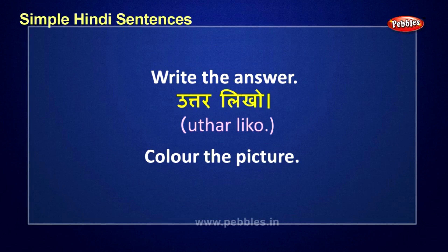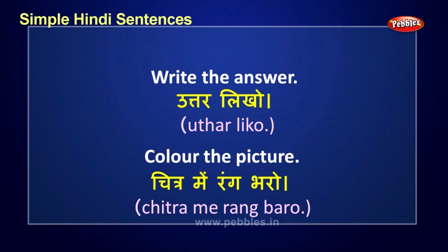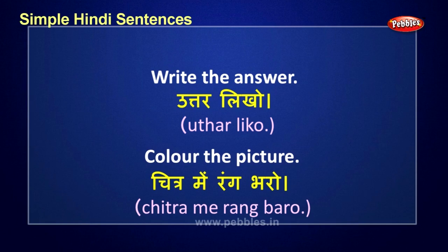Color the picture — she is asking you to color the picture now. How do we say this in Hindi? Chitra me rang varo. For color we say rang, and for picture it is chitra. Color the picture — Chitra me rang varo. Let's revise both sentences: write the answer — Uttar likho; color the picture — Chitra me rang varo. For color it is rang, and for filling we say varo.